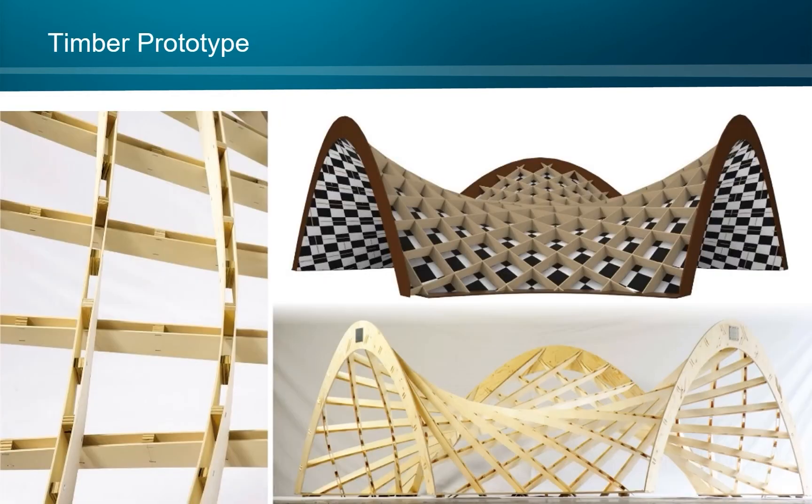However, when we up the scale to approximately 4x4 meters, like in this timber prototype, we have to adapt the construction to successfully resist the larger loads. Here the lamellas are constructed on two levels and connected by square timber studs. We chose to use two parallel lamellas for each direction to resist local buckling under compression. The lamellas of this timber prototype were fabricated by hand using only a table saw.